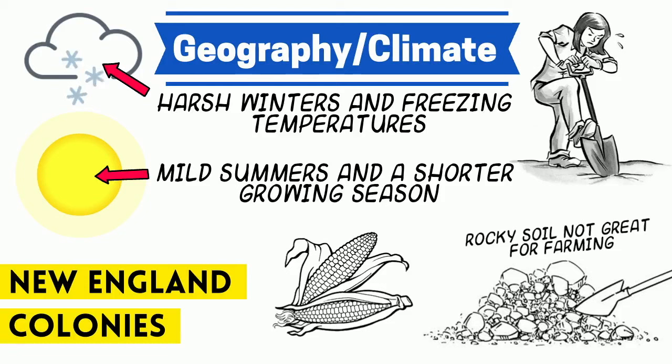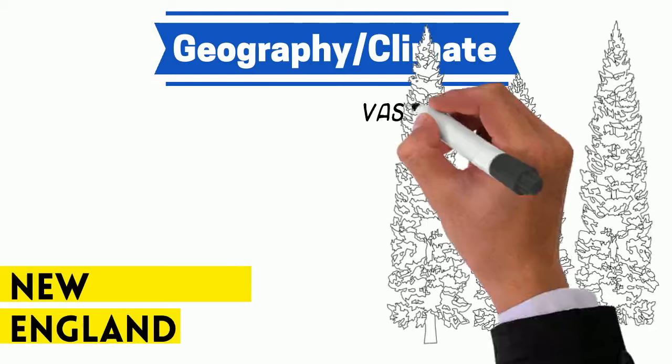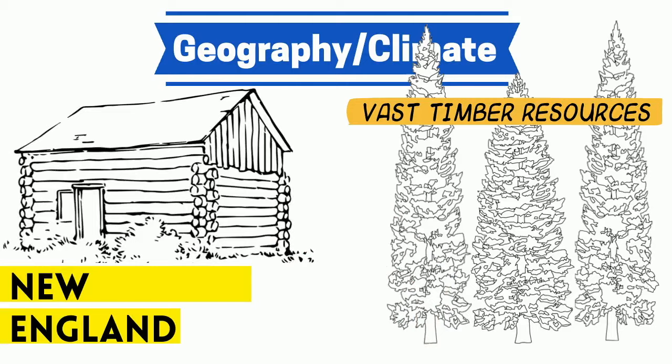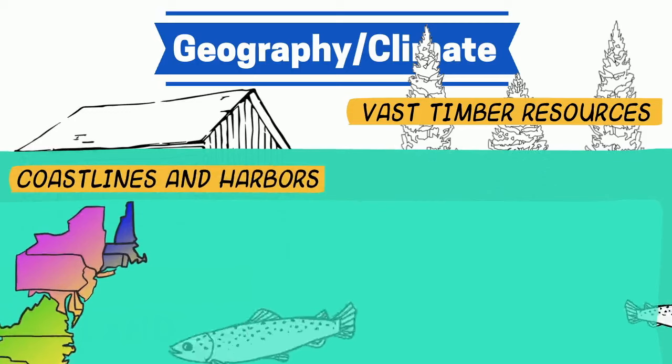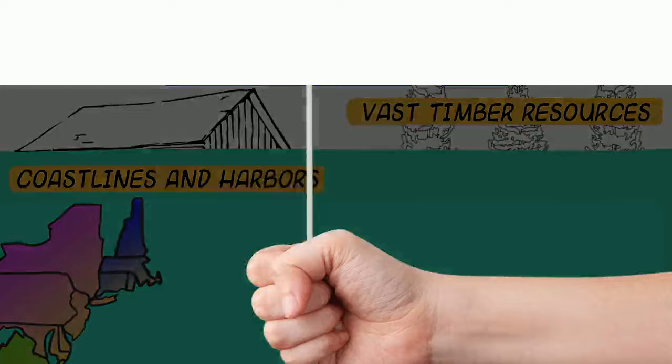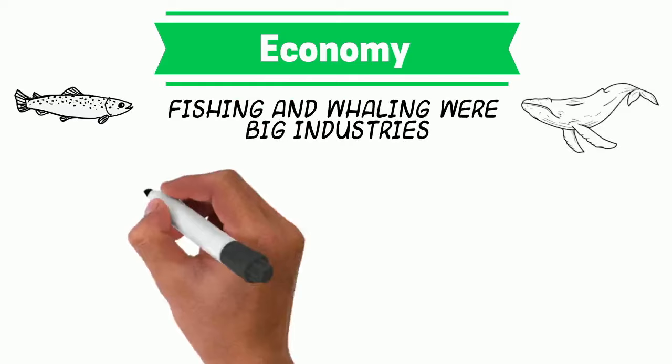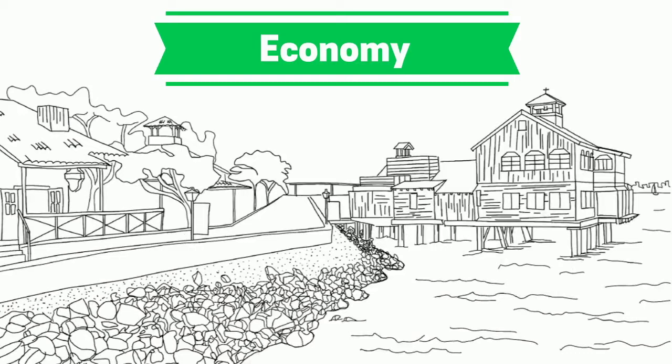Corn was one of the few things they could actually produce from the soil in New England. But what they lacked in soil, they made up for in their vast timber resources. Believe it or not, this was one of the most in-demand items from the UK. The New England region also had lots of coastlines and harbors, which made it great for fishing and shipping. Fishing and whaling could be done from those harbors, and the timber resources were used for shipbuilding and homebuilding.